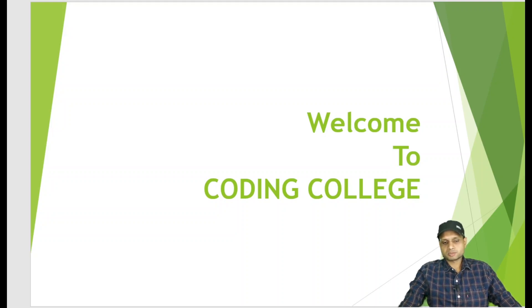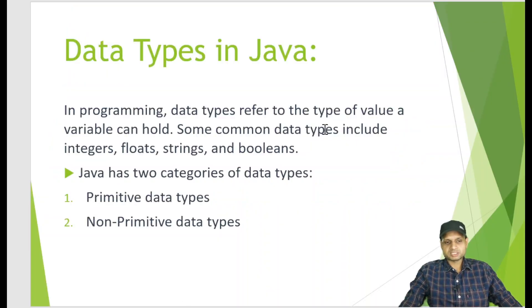Today's topic is data types in Java. Data types in Java are actually two types. The first one is primitive data types and the second one is non-primitive. Primitive means simple data types. The primitive data types represent single values, not complex objects.